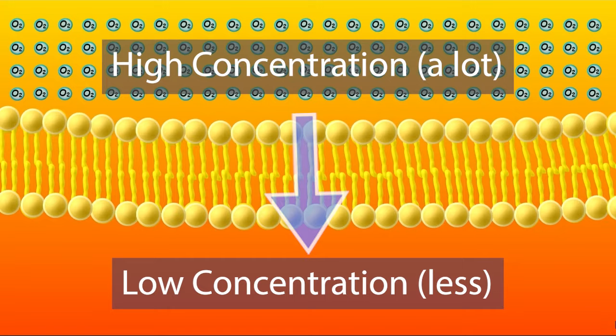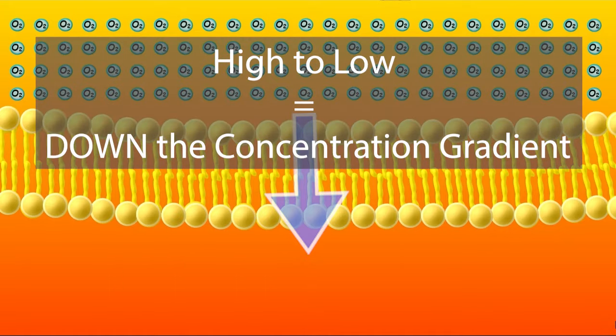Overall, molecules move from areas of high concentration to areas of low concentration. Another way to say this is that they move down their concentration gradient.